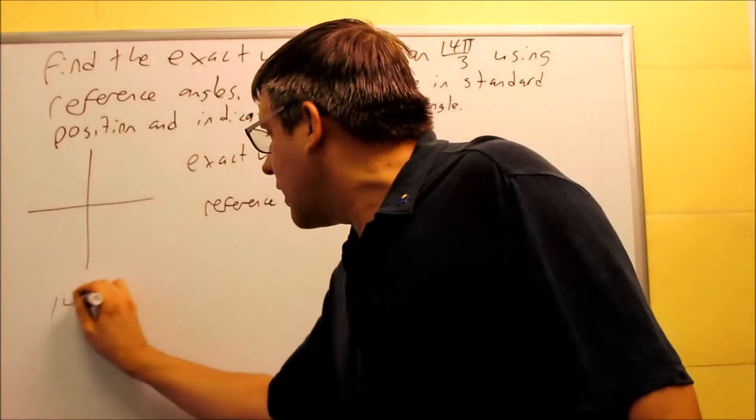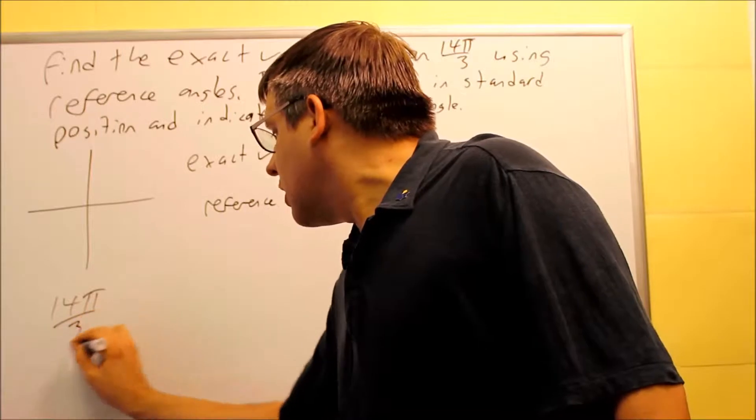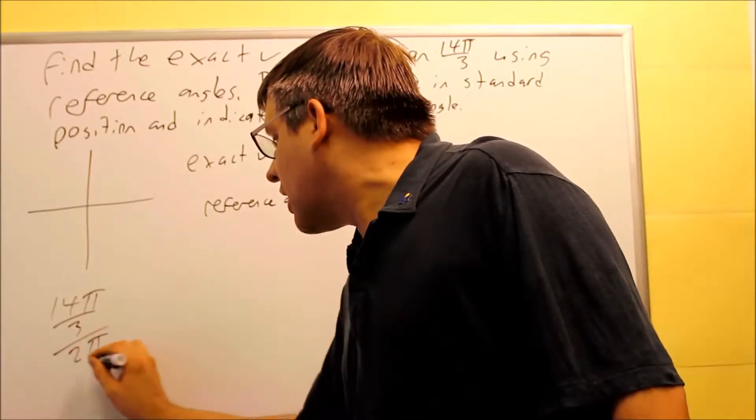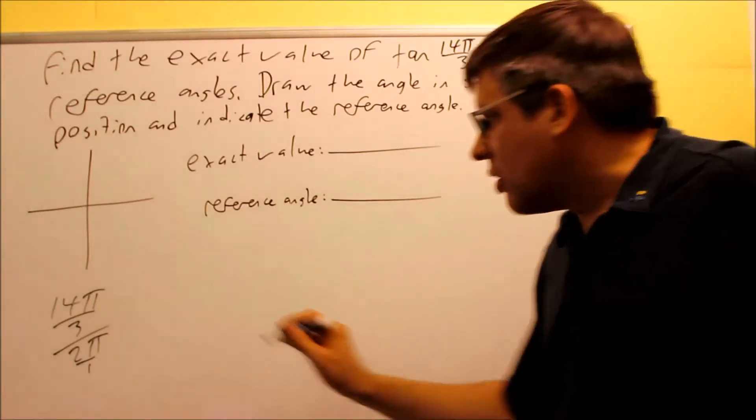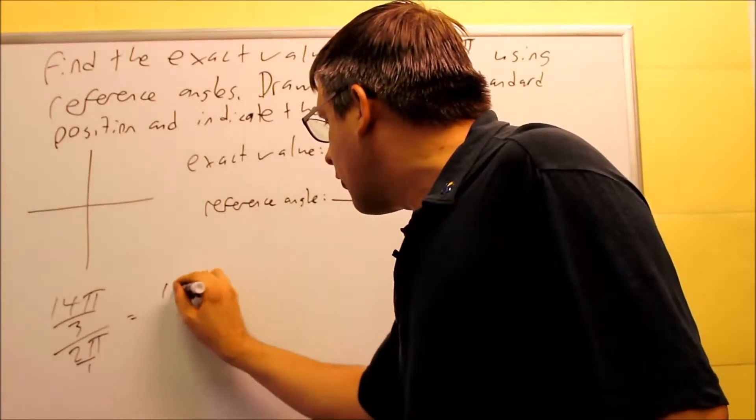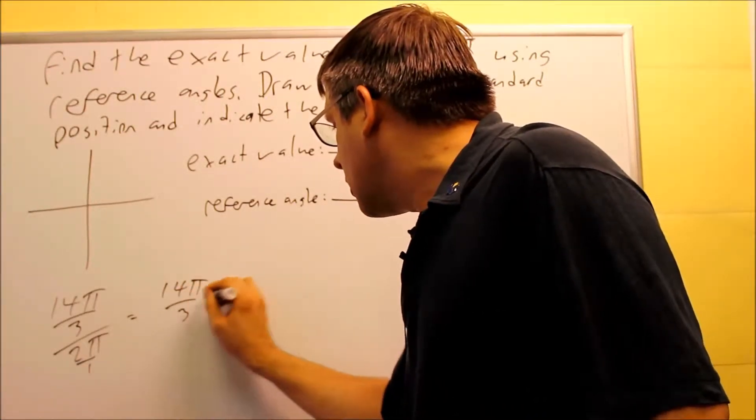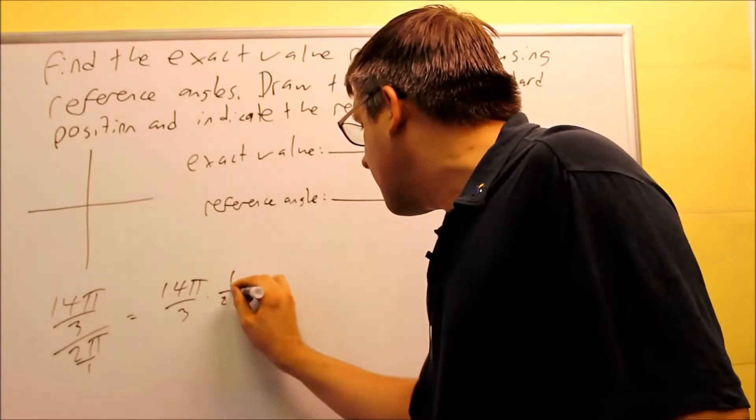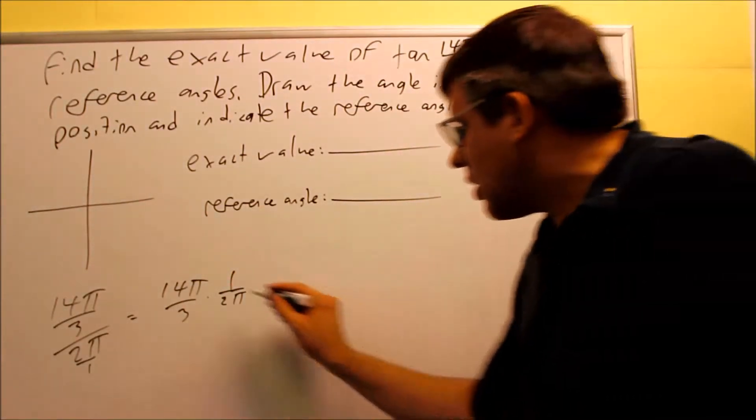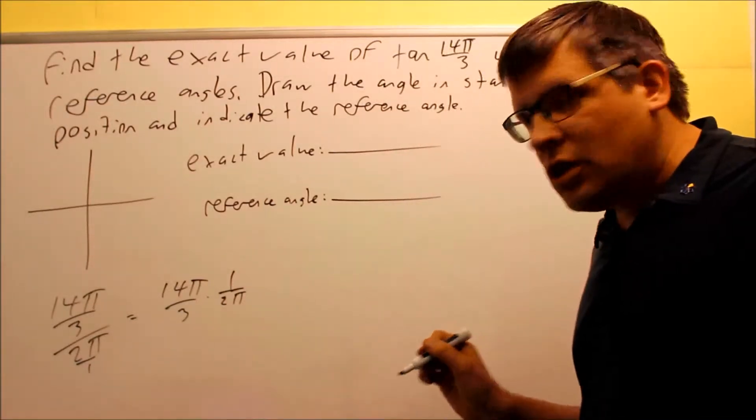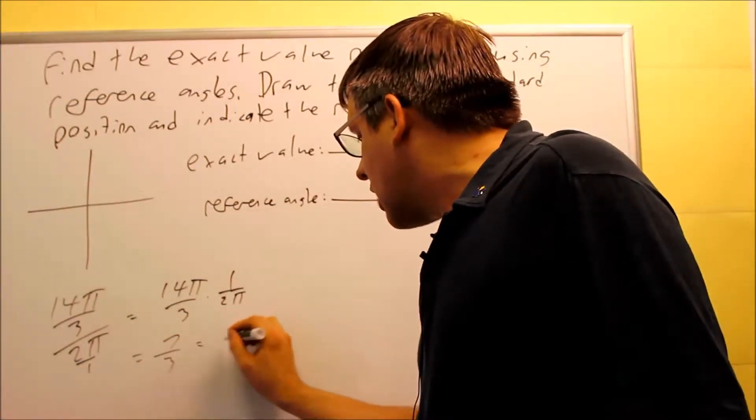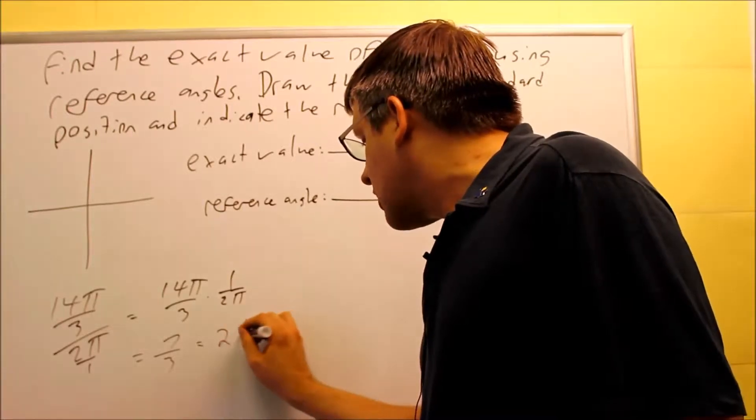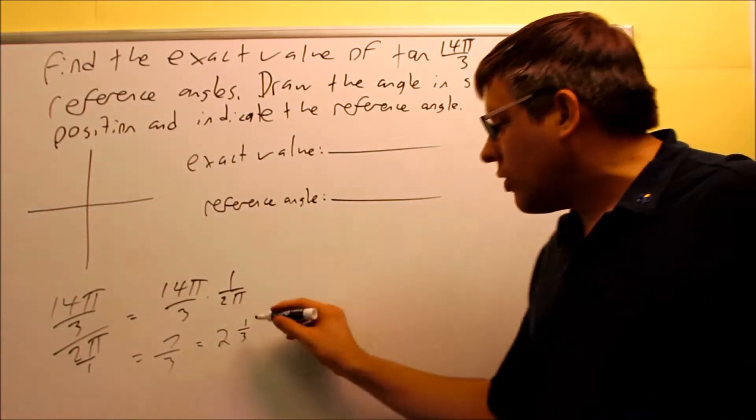Okay, so 14π over 3, I want to divide that by 2π because I want to see how many revolutions go into that. So doing it this way, I get 14π over 3 times 1 over 2π. The π's are going to cancel and also a 2 will go into the 14, so I would get 7 thirds. Now, 7 thirds I can write as a mixed fraction and that would be 2 and 1 third.